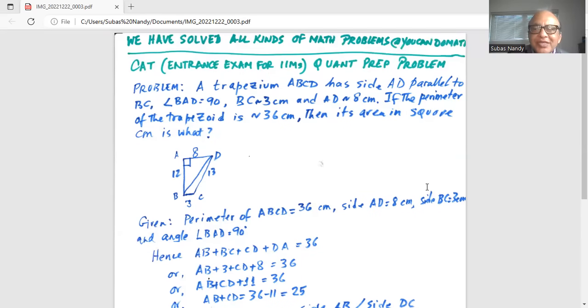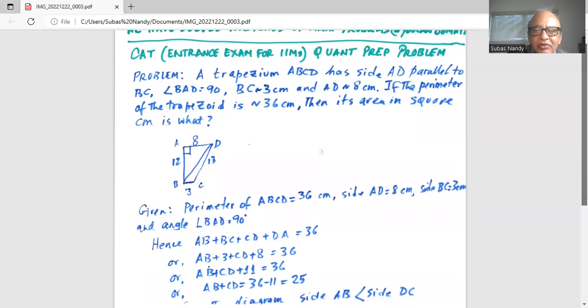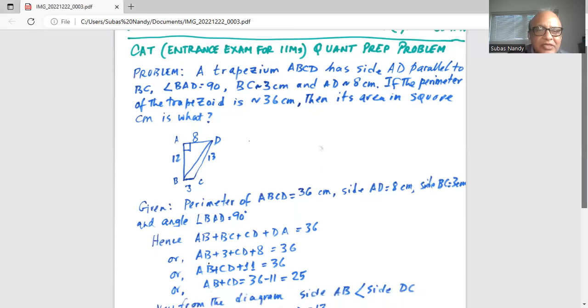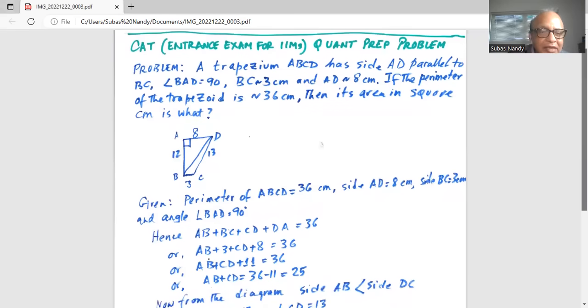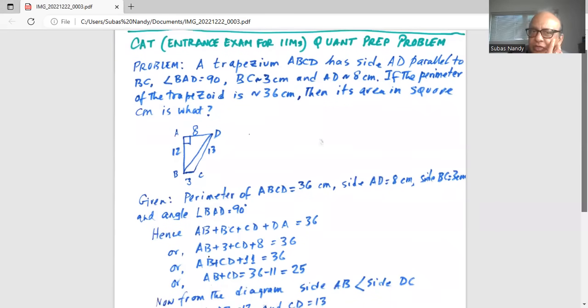So given perimeter of ABCD is 36 centimeters, side AD is equal to 8 centimeters, side BC equals 3 centimeters, and angle BAD is 90 degrees, as is shown in the diagram.